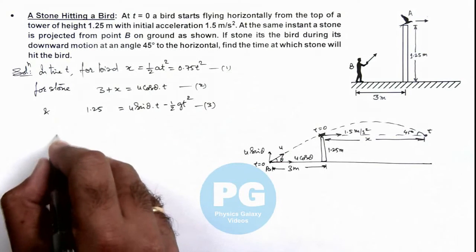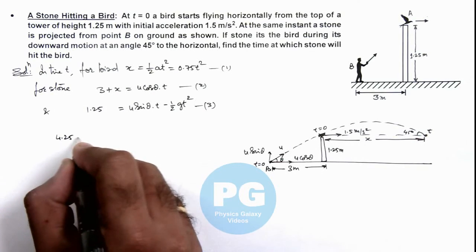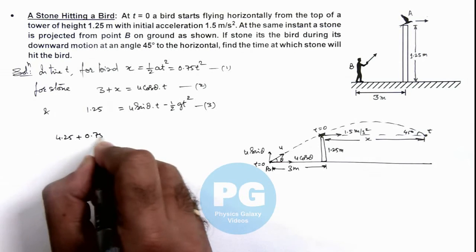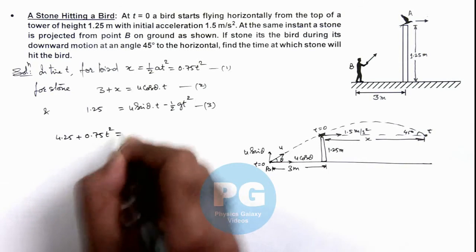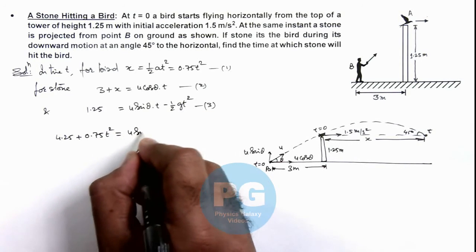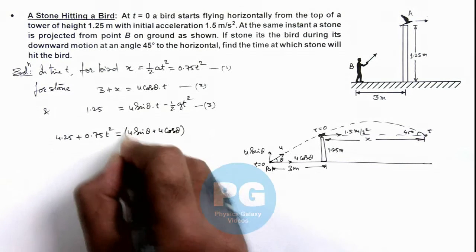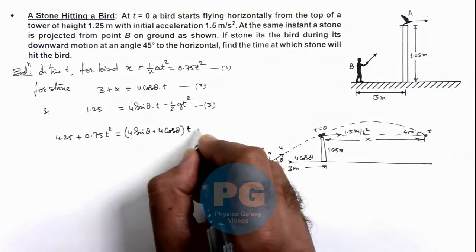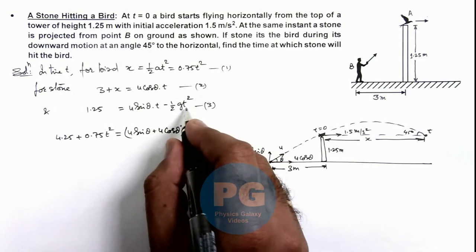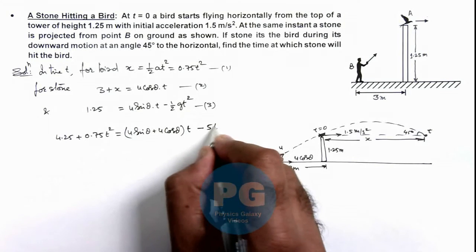This will be 4.25 plus 0.75 t square equals u sin theta plus u cos theta multiplied by t minus half g t square. Taking g as 10, this is 5 t square.